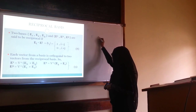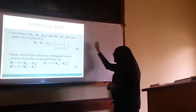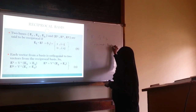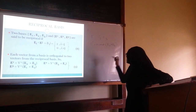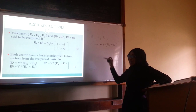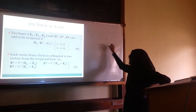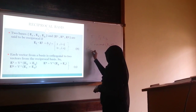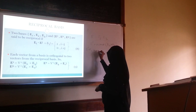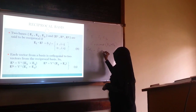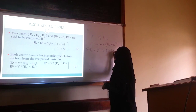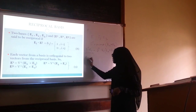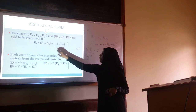Since one vector from the reciprocal basis is orthogonal to two vectors from the original basis, we can write E1* = γ·(E2 × E3). This cross product gives a direction perpendicular to the plane containing E2 and E3. Taking the dot product on both sides with E1: E1·E1* = γ·(E1·(E2 × E3)). From the reciprocal basis definition, E1·E1* = 1.